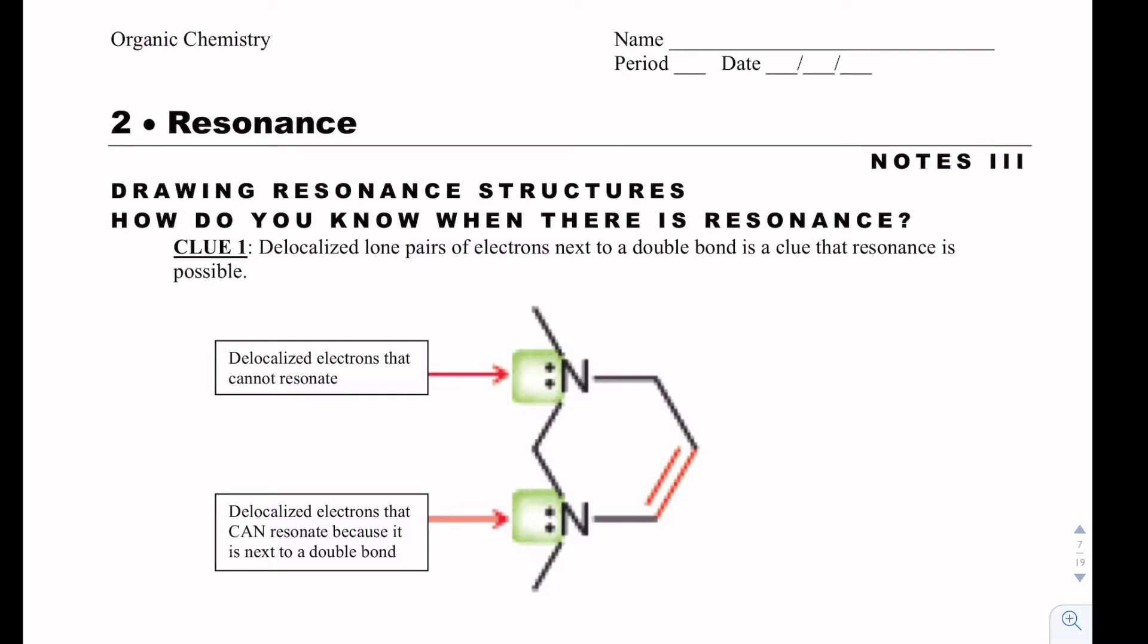One clue is that you have delocalized lone pairs of electrons next to a double bond, and that would be a clue that you have resonance. Here, we have these lone pairs of this nitrogen that can go and create a double bond, but because that arrow alone is not good enough, because that would allow this carbon to have five bonds, and we know that that's not going to happen, we can kick out the delocalized electrons in the double bond and put them on the adjacent carbon.